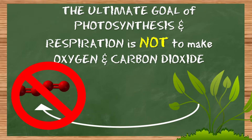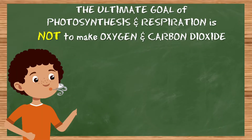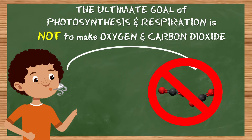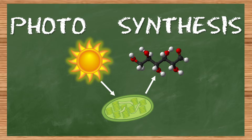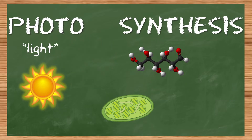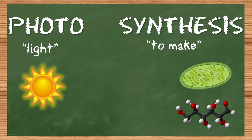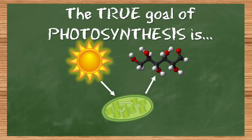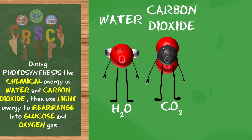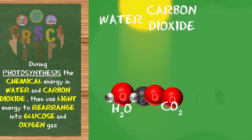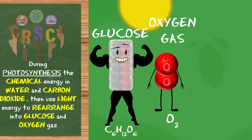That's called photosynthesis — it helps us breathe. Not really. It's a great benefit that plants put out oxygen during photosynthesis, but that's actually not the goal. Just like during cellular respiration the goal isn't to put out carbon dioxide — those are both byproducts, or waste. Look at the word photosynthesis: photo means light and synthesis means to make. If you think about our previous lesson on food chains, the goal here is energy — plants use chemical energy in water and carbon dioxide and use light energy to rearrange them into glucose and oxygen gas.